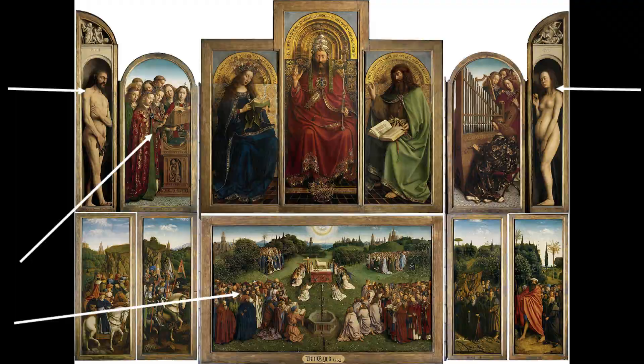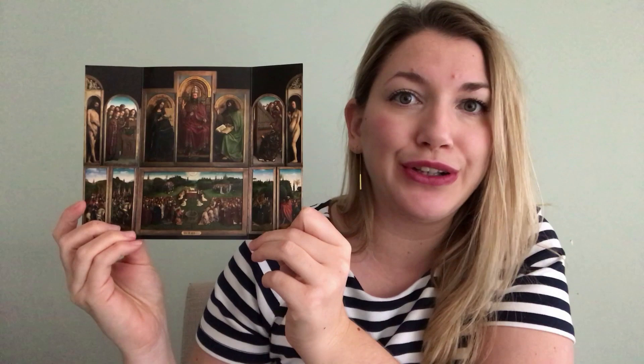This is how the Ghent Altarpiece looks during most of the year — closed — and these are the outer panels you would see, showing the Annunciation, St. John, and the couple that commissioned the altar. However, during certain days of the year they would open it and it would look completely different. If you're going to visit the Van Eyck exhibition at the MSK in Ghent, you will see the restored outer panels of the altarpiece plus Adam and Eve. The rest of the Ghent Altarpiece remains at the Cathedral, but if you visit Ghent after April 30th of 2020, you will see the whole altarpiece there.